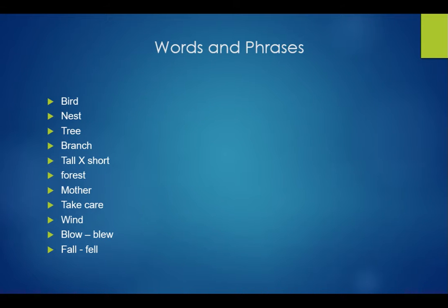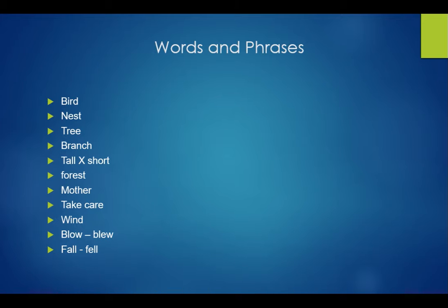Nest — ghosla, godu in Kannada. A bird has a nest, and in the nest there are young nestlings — baby birds. The mother bird is also there. The nest is on a branch of the tree — shakha. This tree was very tall, and opposite of tall is short. The bird had built a nest in a tall tree in the forest — forest ka matlab jungle.